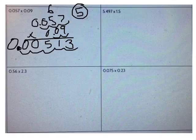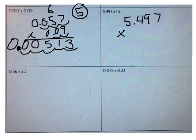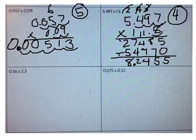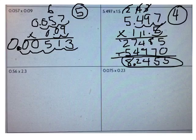Now do the next problem on your own. What's 5 and 497 thousandths times 1 and 5 tenths? Go ahead and solve that problem now. The correct answer is 8 and 2455 ten-thousandths. Check your work with mine.